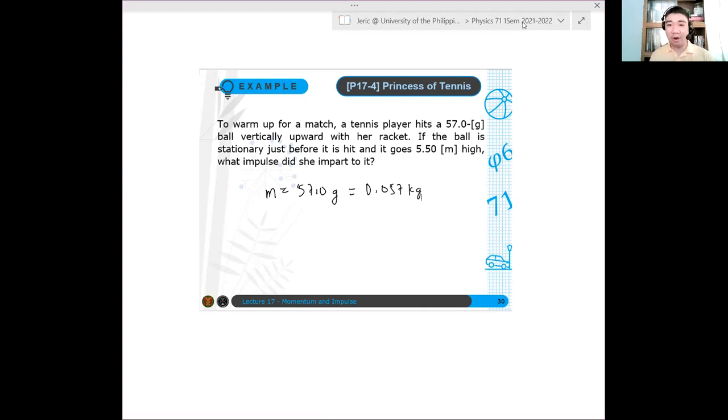If the ball is stationary before it hits and goes 5.50 meters high, so let's say our displacement Y minus Y naught is 5.50 meters. So what impulse did she impart to it? The question now is what is J? What is J?